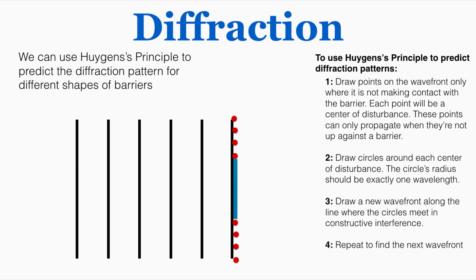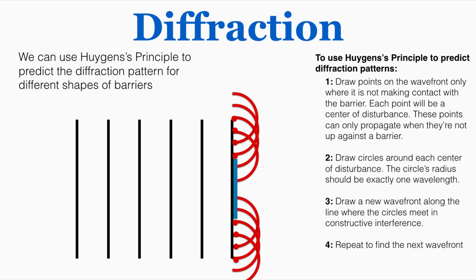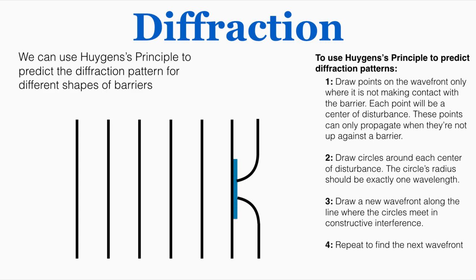Next, draw circles around each center of disturbance. The circle's radius should be exactly one wavelength. Then draw a new wavefront along the line where the circles meet in constructive interference. That's where all the circles are meeting together in constructive interference and not being canceled out by other waves — this is what the new line of the wavefront will look like as it moves through the barrier.